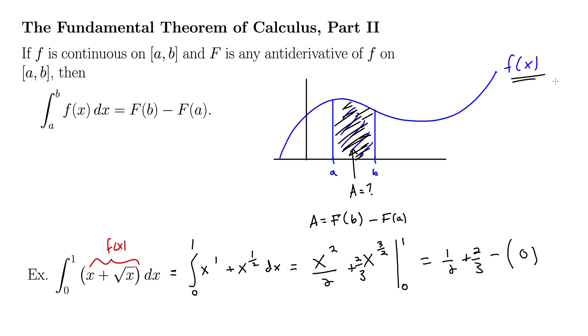Okay, so 1 half plus 2 thirds. We can get a common denominator here. 3 over 3, 2 over 2. That gives us a common denominator of 6.